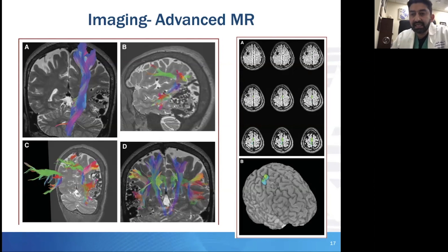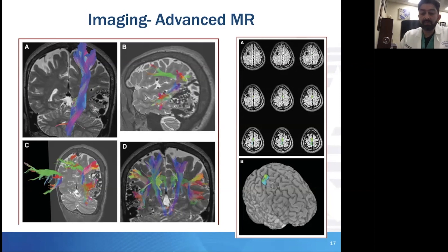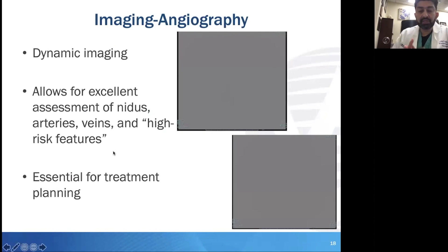On the right-hand side, you can see a BOLD MRI — a functional MRI — which we now routinely utilize for lesions in eloquent cortex, especially motor, language, and visual cortex, to study the anatomic location of the AVM relative to the eloquent cortices. But the gold standard for looking at that angioarchitecture we've been talking about is really getting dynamic imaging, and that of course is angiography.